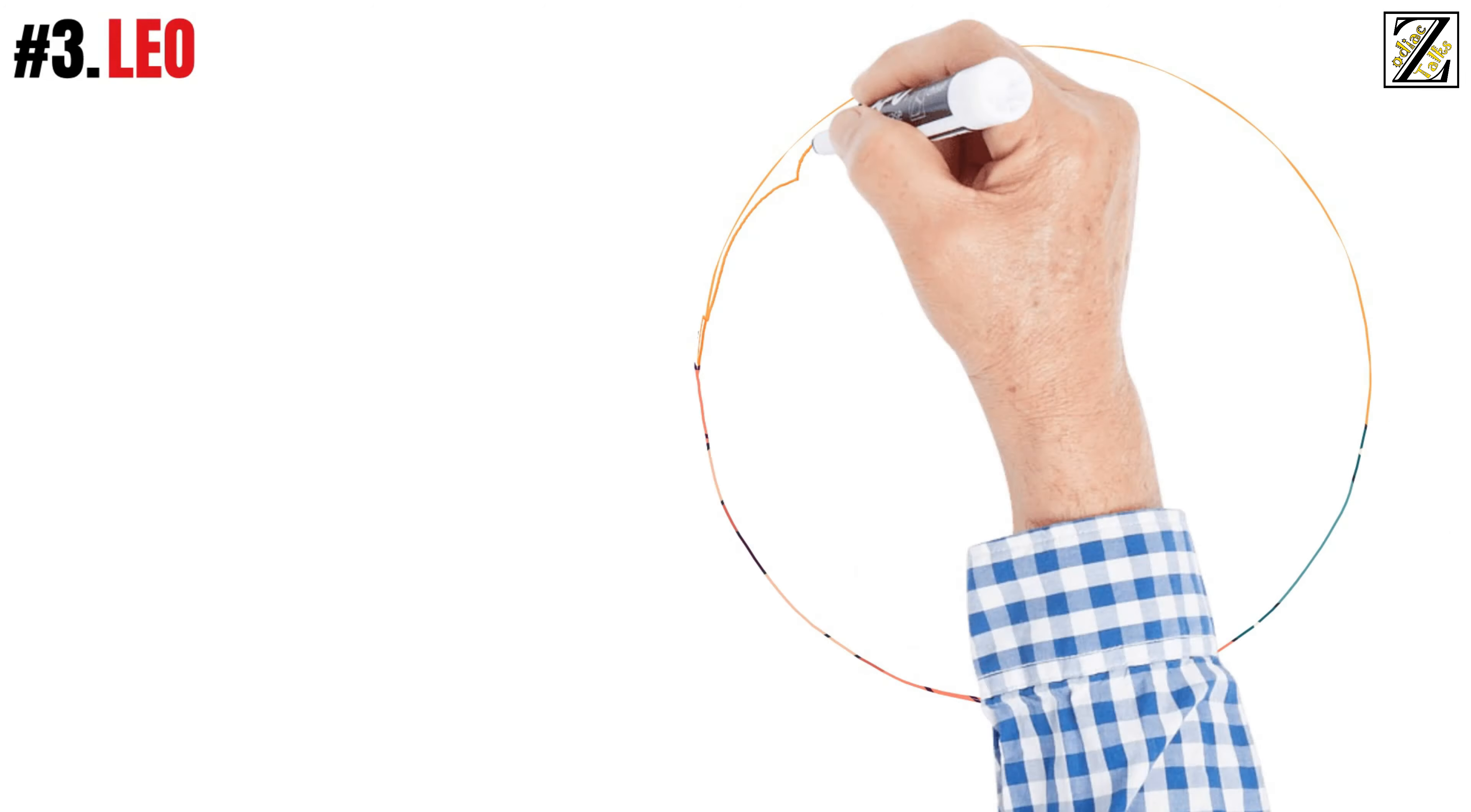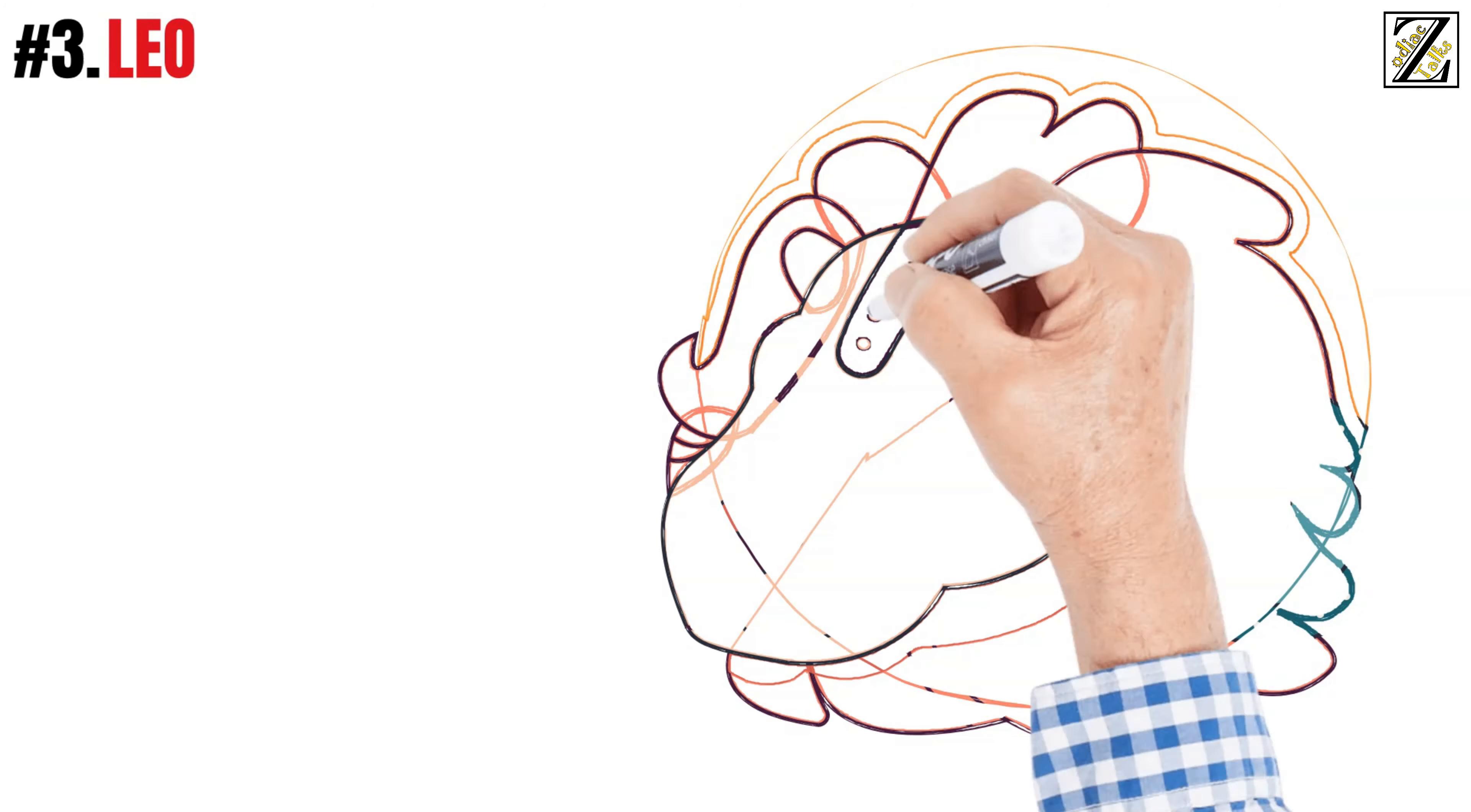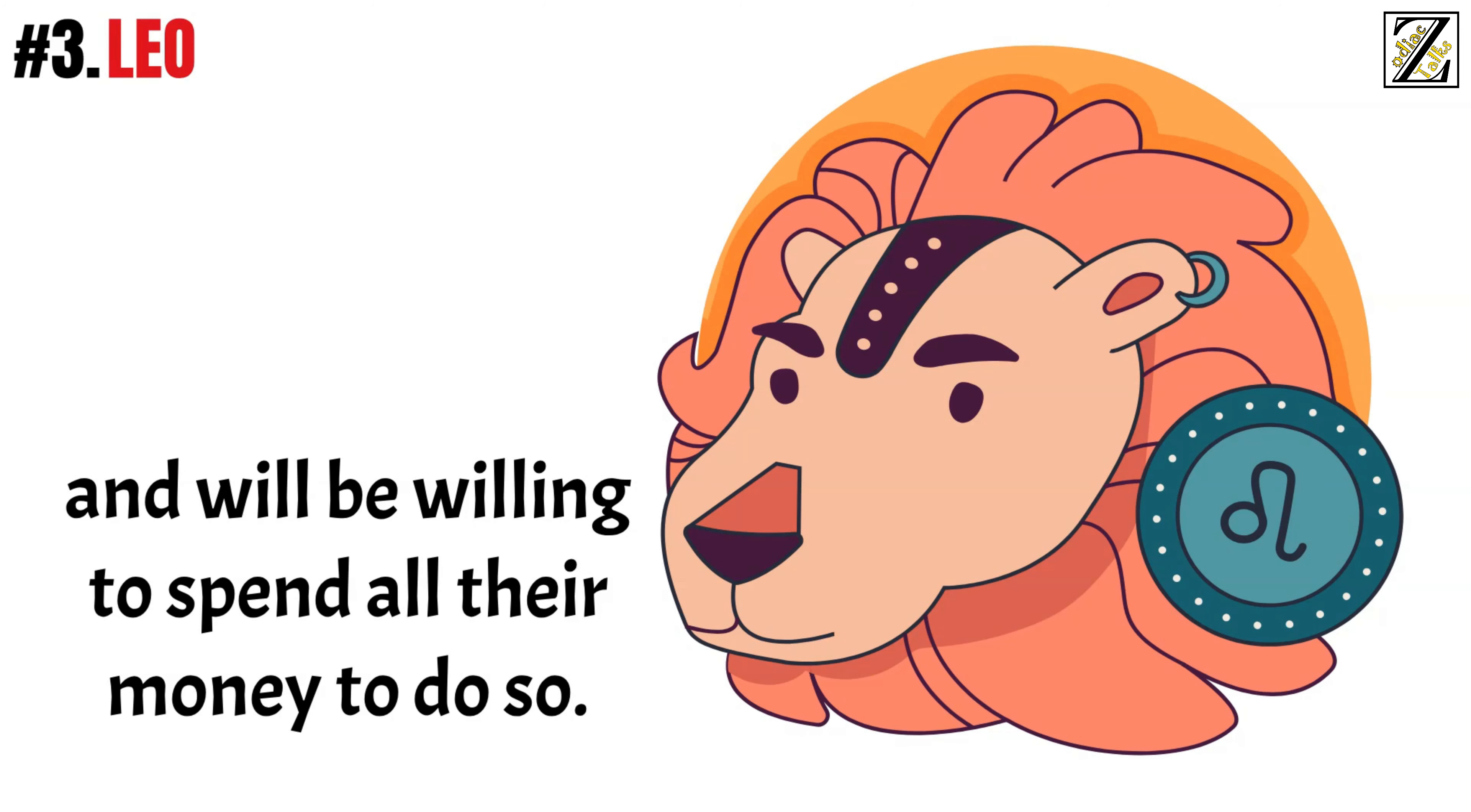Number three, Leo. Leo types are passionate and enthusiastic, so being stingy is not in line with their positive outlook. They'll go to great lengths to fulfill their dreams and live a life worthy of a movie and will be willing to spend all their money to do so.